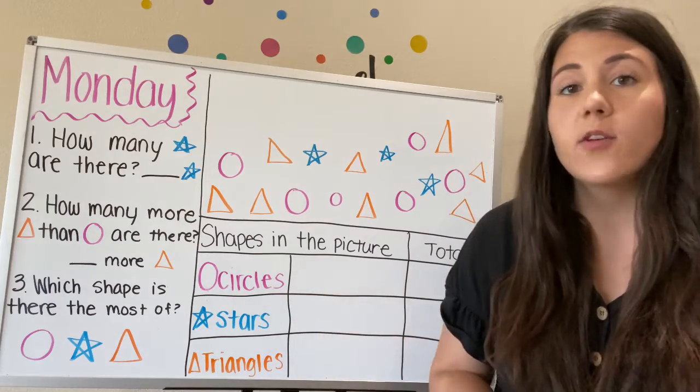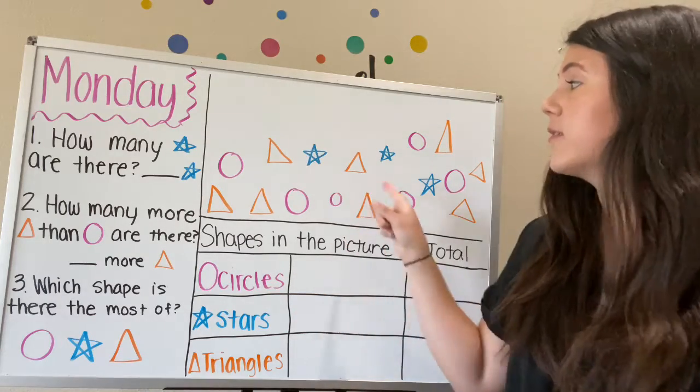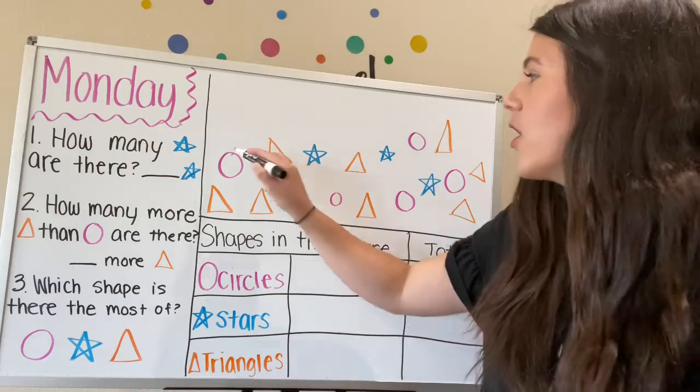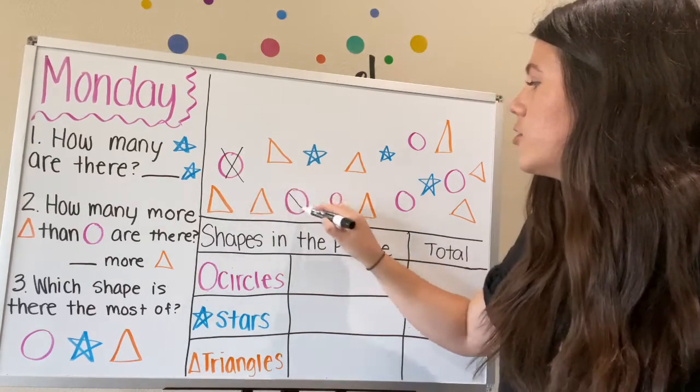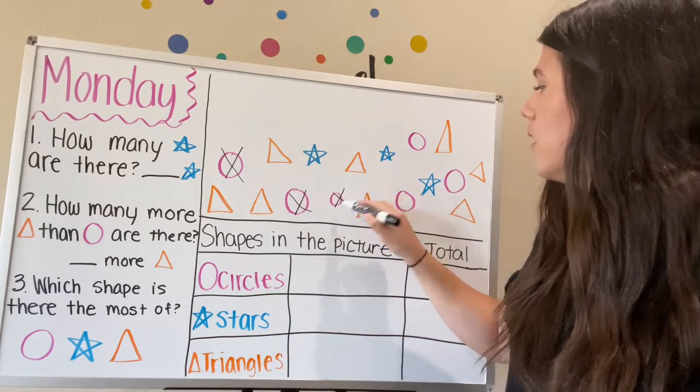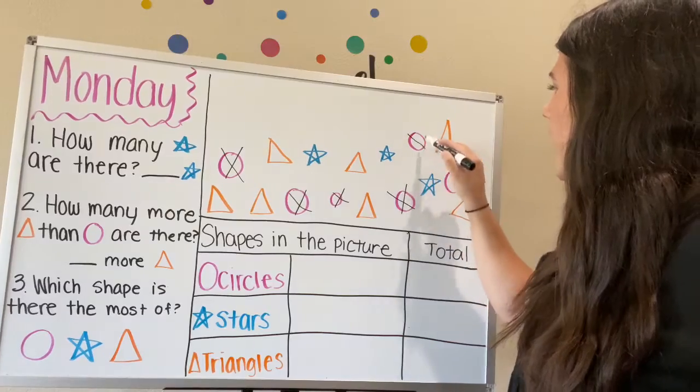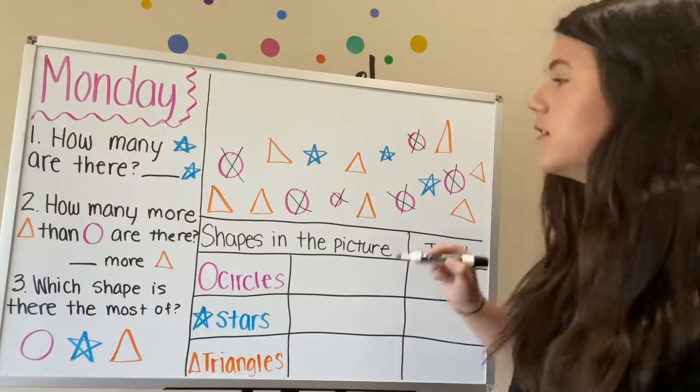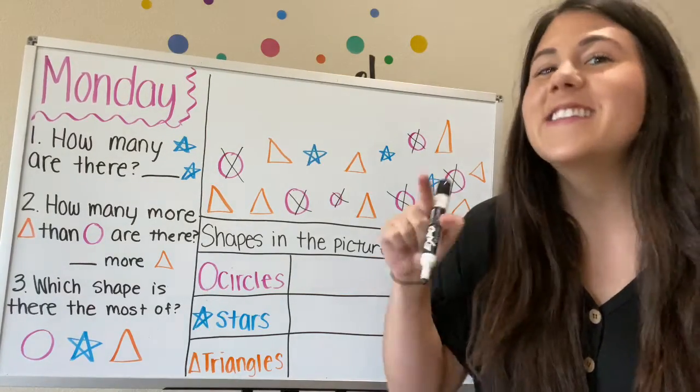So let's start with circles. Okay, so as we count the circles, we're going to cross them out in our picture. One, two, three, four, five, six. So there are how many circles? Six circles.